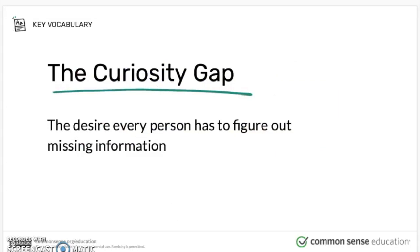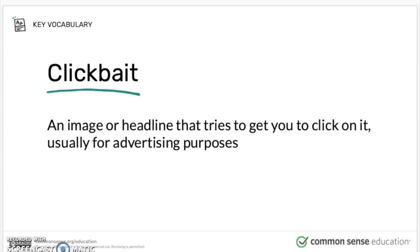The reason is something called the curiosity gap — it's the desire every person has to figure out missing information. What clickbait does is use the curiosity gap to get you to click on it. Clickbait is an image or headline that tries to get you to click on it, usually for advertising purposes. It could be something totally unrelated, and when you click on it, it can take you to a website just to get you there, just so they can get those visits and views. Those websites then talk to their advertisers or sponsors and say, 'Look how many people have clicked on our website.' It's usually trying to get you in using false reasons.